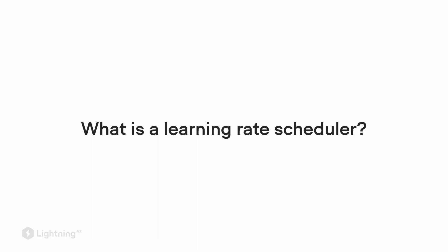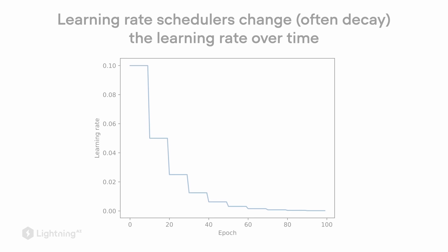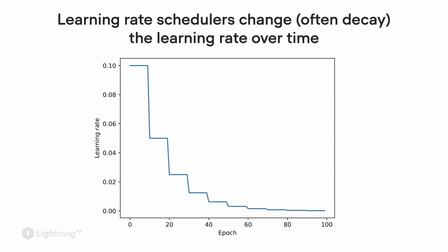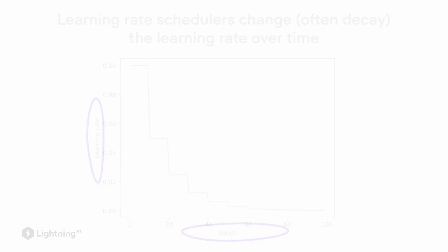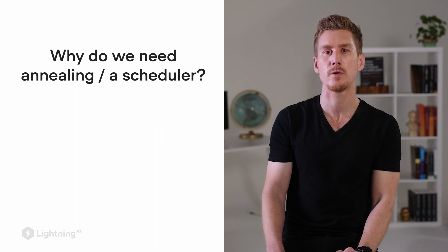In the previous videos, we talked about finding good learning rates. Let's now talk about a slightly more advanced concept: learning rate schedulers. Learning rate schedulers change — often they decay the learning rate over time. Here I plotted a typical example of a learning rate scheduler, where you can see the epoch number on the x-axis and the learning rate value on the y-axis, and we are decreasing the learning rate every so many epochs. What is the point behind using a scheduler to anneal or decay the learning rate over time?